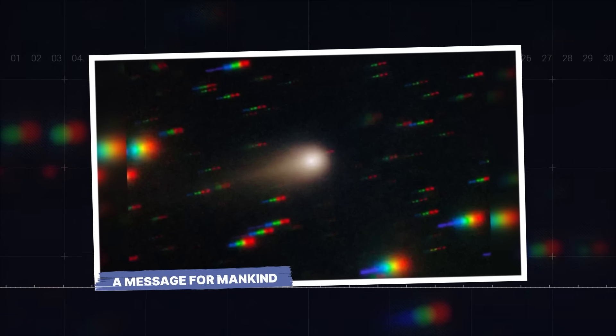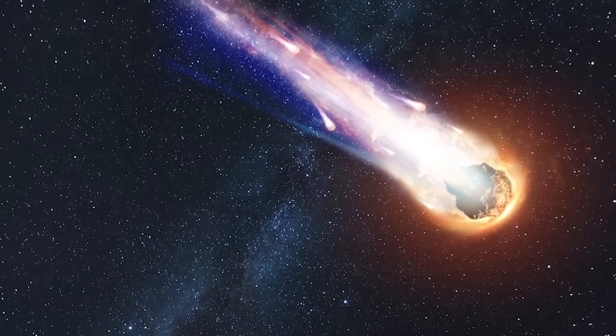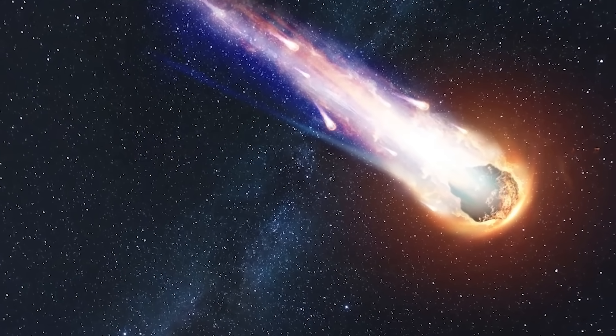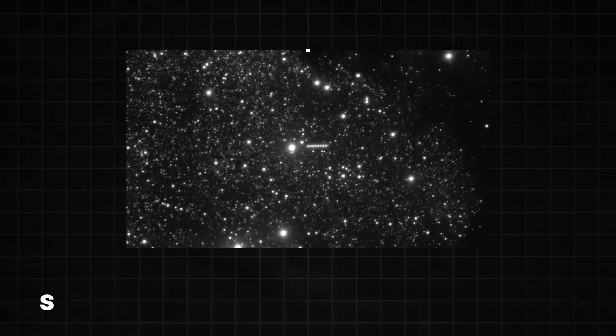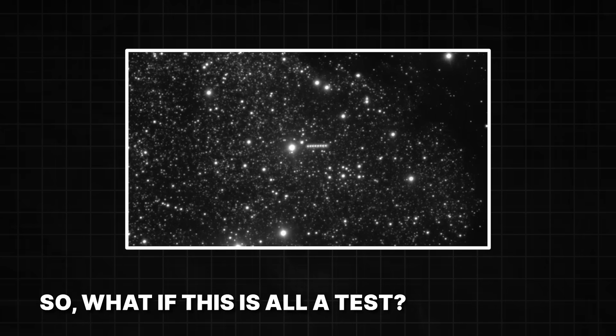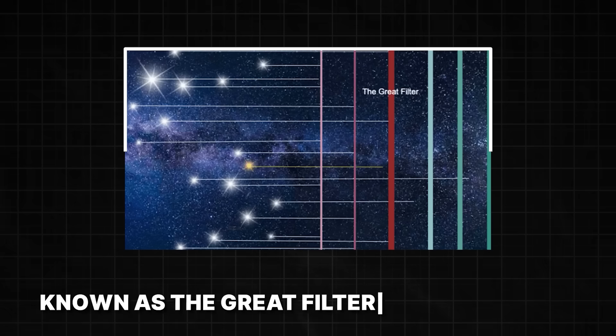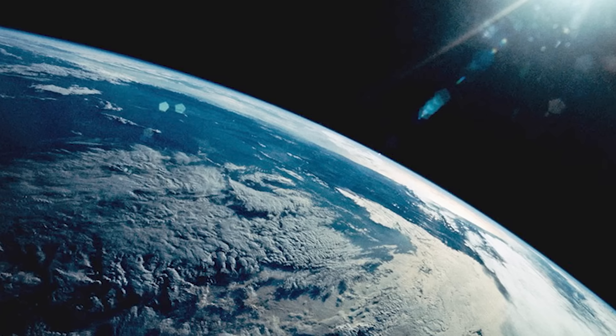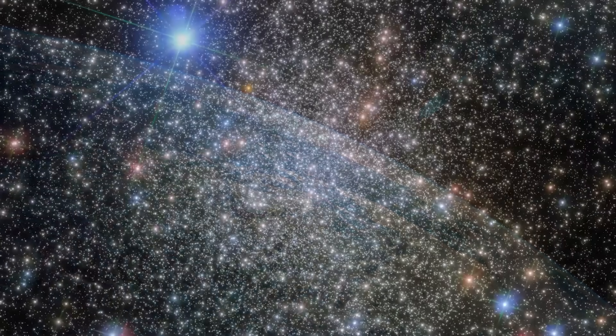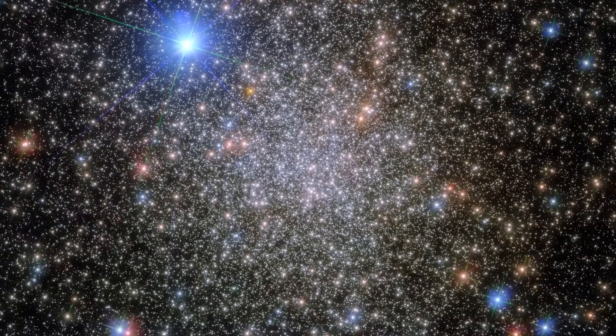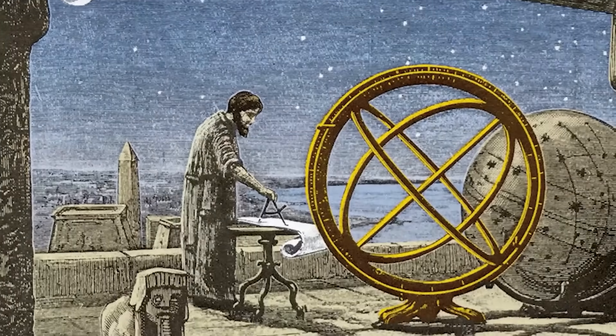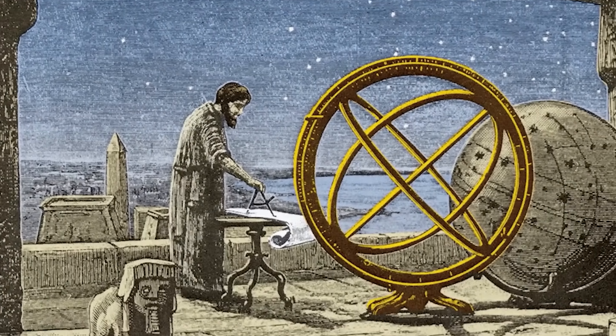A Message for Mankind. The chilling sequence of interstellar visitors suggests a pattern too deliberate to ignore. So, what if this is all a test? This is a concept that scientists and thinkers have talked about for decades, known as the Great Filter. The idea that somewhere between the dawn of life and the ability to colonize the stars, there is a barrier, a filter that very few, if any, civilizations manage to pass.